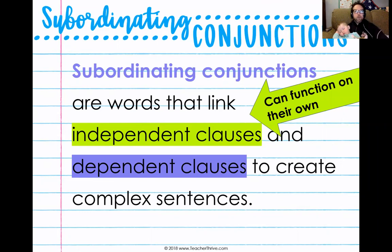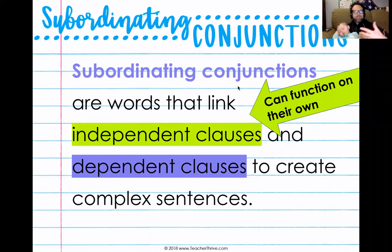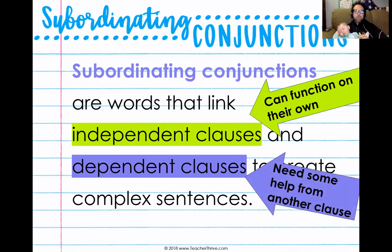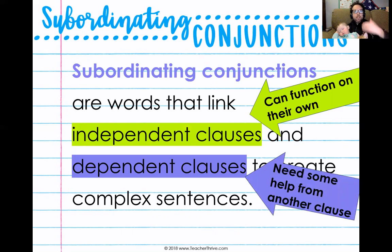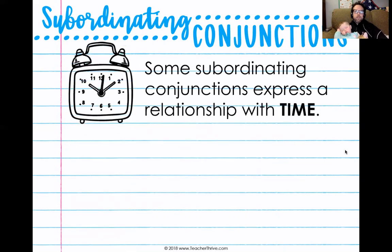It doesn't need any extra help. It can do a job all by itself. When you guys say independent work, you're doing your work by yourself. So an independent clause is a group of words that has a subject, it has a predicate, and it can function as a simple sentence. Whereas a dependent clause — it's missing something. It needs help from the other clause. It may have a subject and a verb, but it starts with a subordinating conjunction, whereas coordinating conjunctions link two independent thoughts. A subordinating conjunction is something that is below — it needs some help.